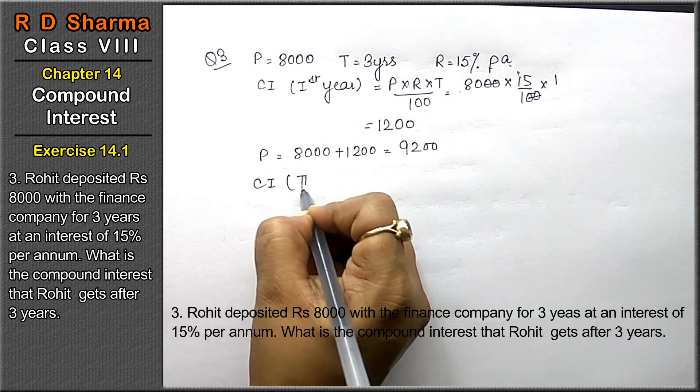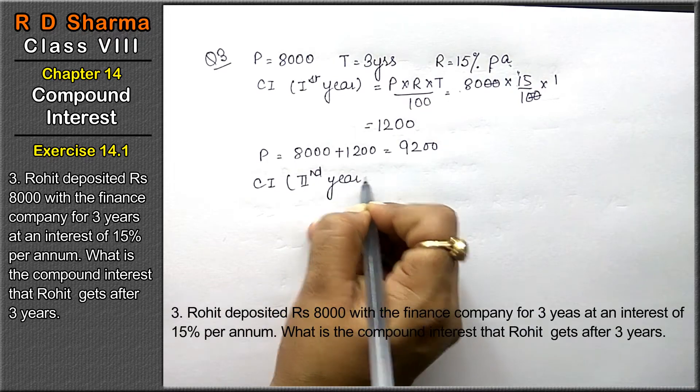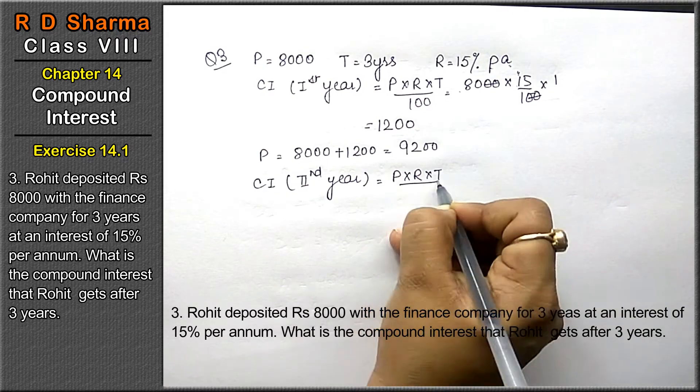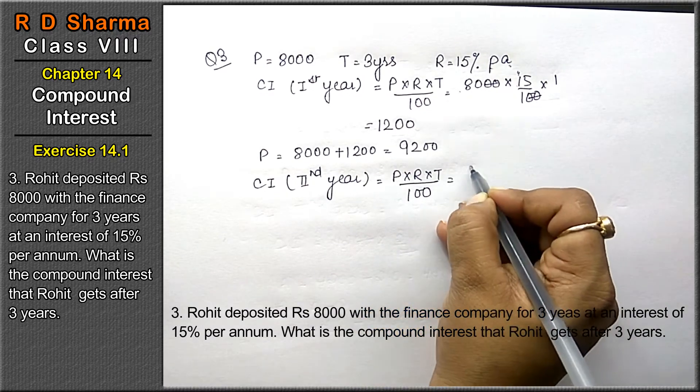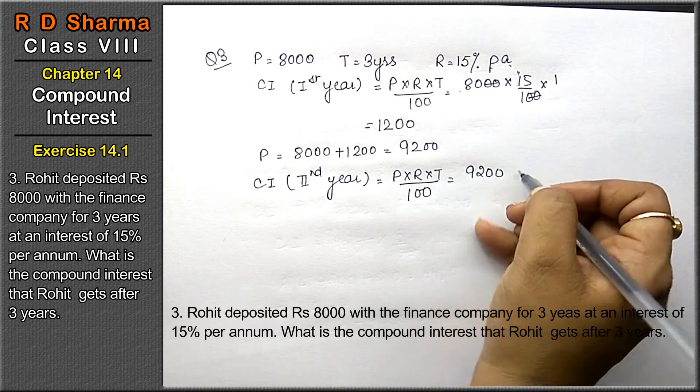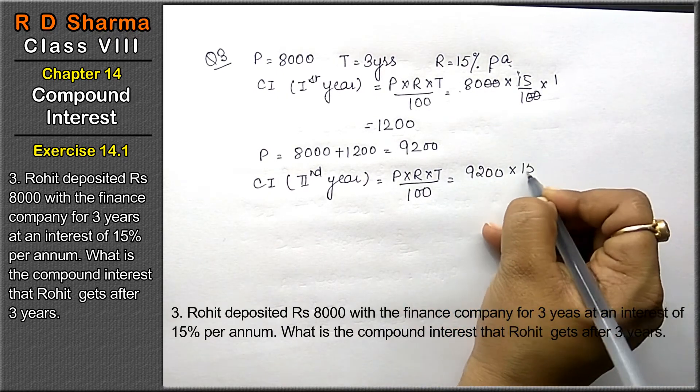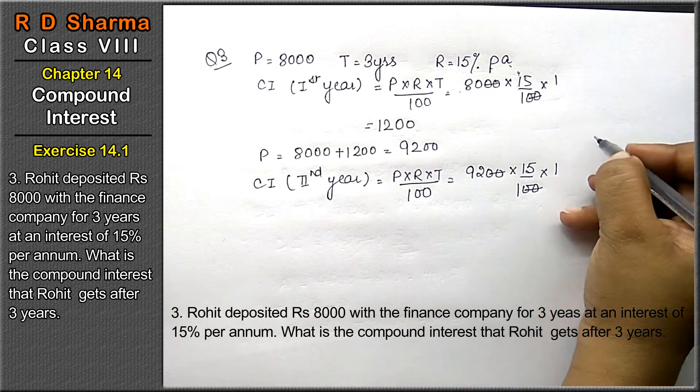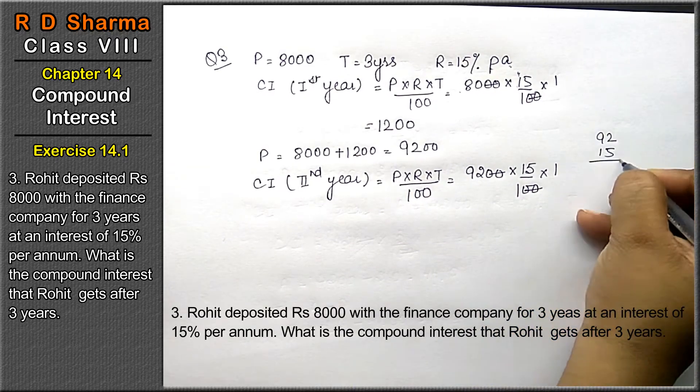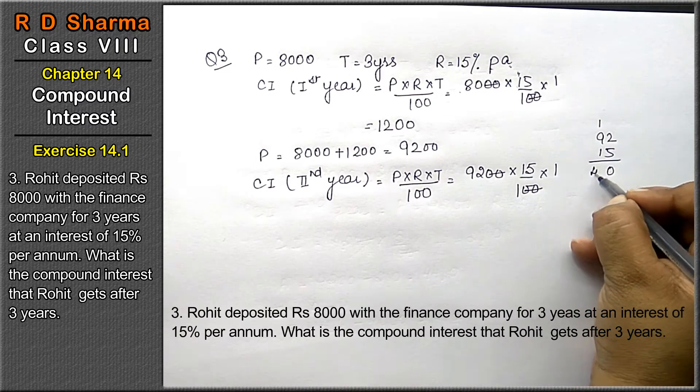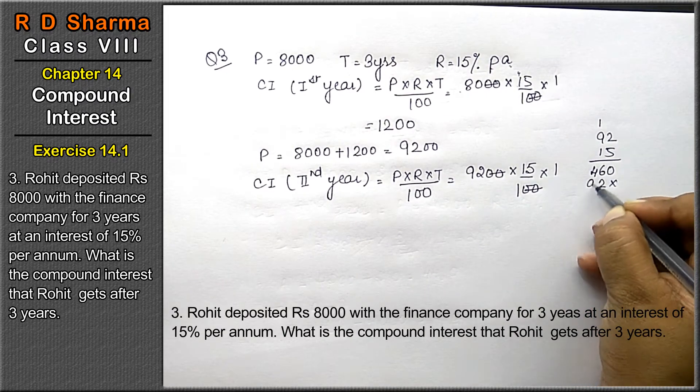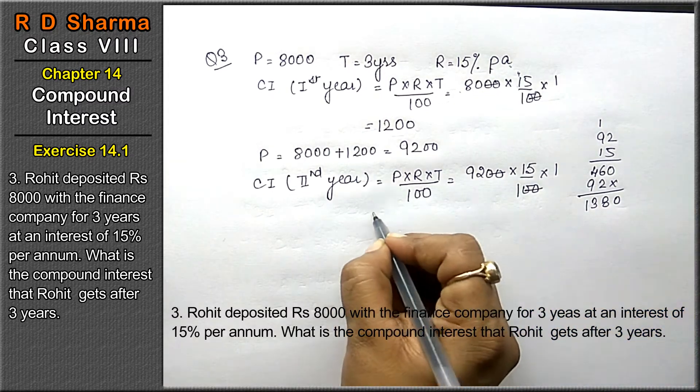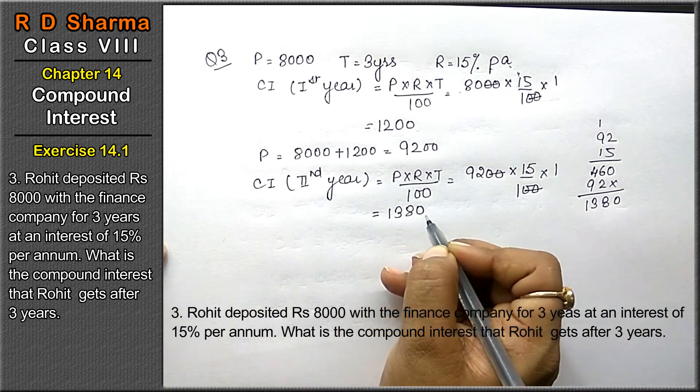Now principle for second year is 8000 plus 1200 which we got as interest, that means 9200 rupees. Compound interest for second year equals to P into R into T upon 100. P is 9200, R is 15%, T is 1 year. The calculation gives us Rs. 1380.